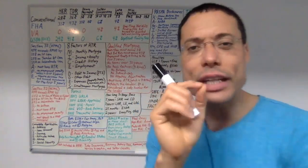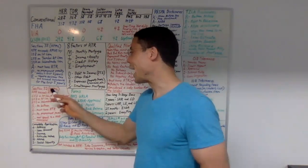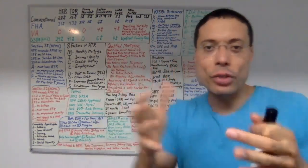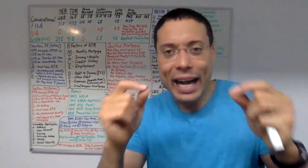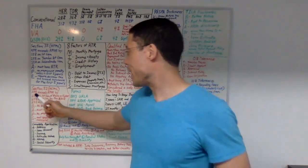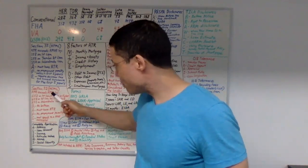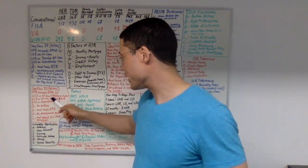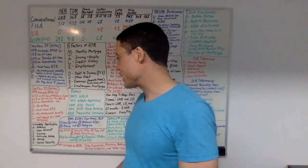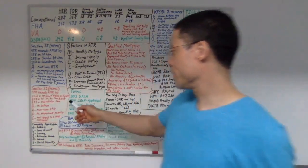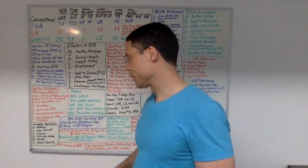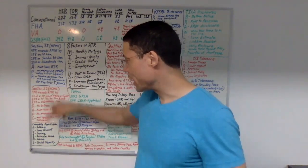What are Section 32 loans? Section 32 loans are high-cost mortgage loans. A loan is considered a Section 32 high-cost mortgage loan when the APR exceeds the APOR by 6.5% on a first lien of $50,000 or higher, 8.5% on a first lien under $50,000, or 8.5% on a subordinate lien.